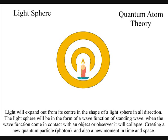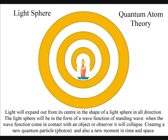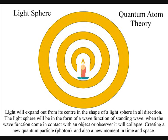Light will expand out from its center in all directions as a light sphere of standing wave functions. Only when a wave function comes in contact with the electrons on the surface of an atom does it collapse into a quantum particle.